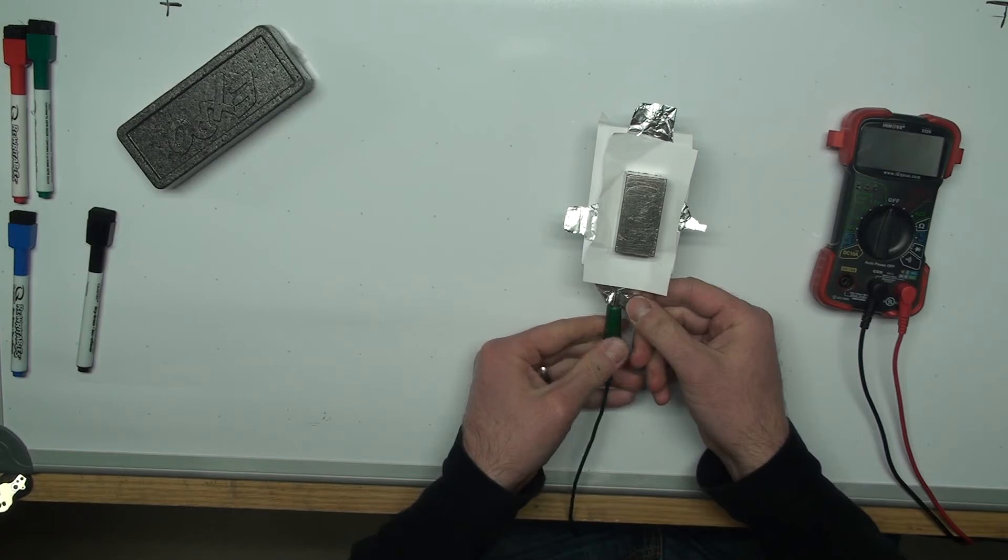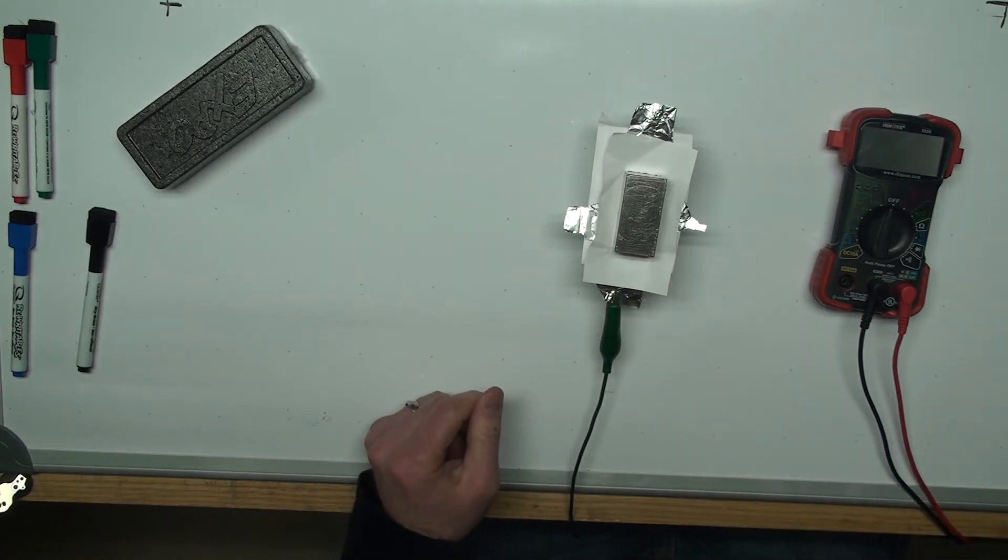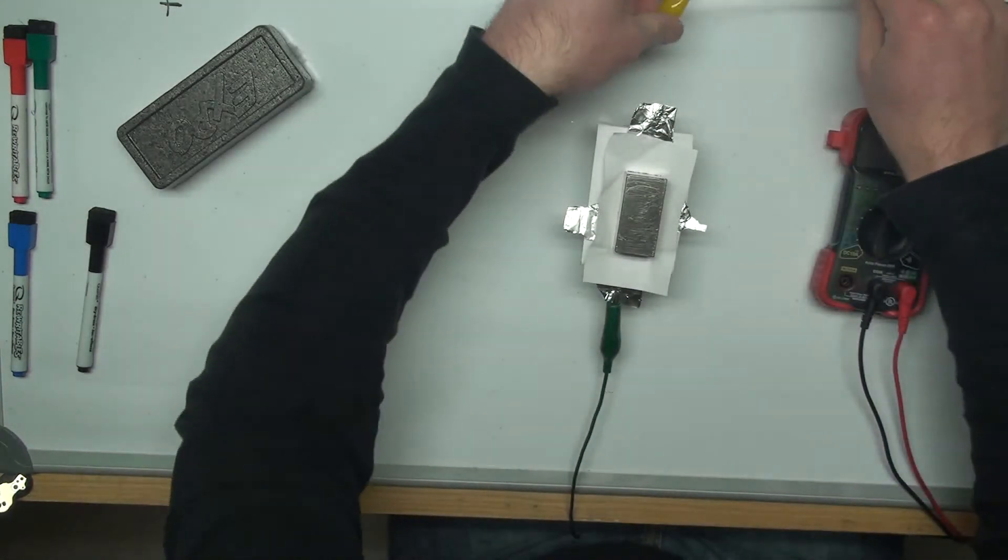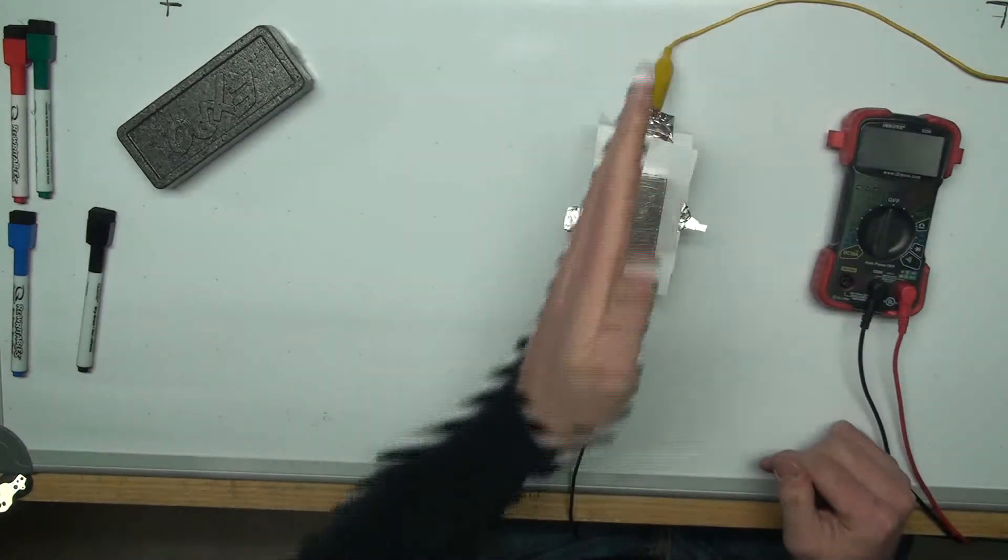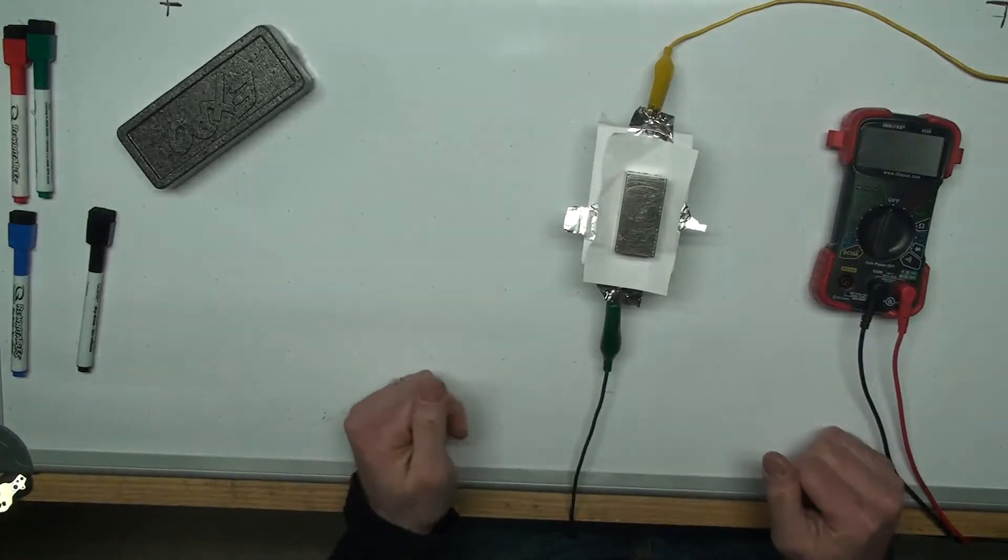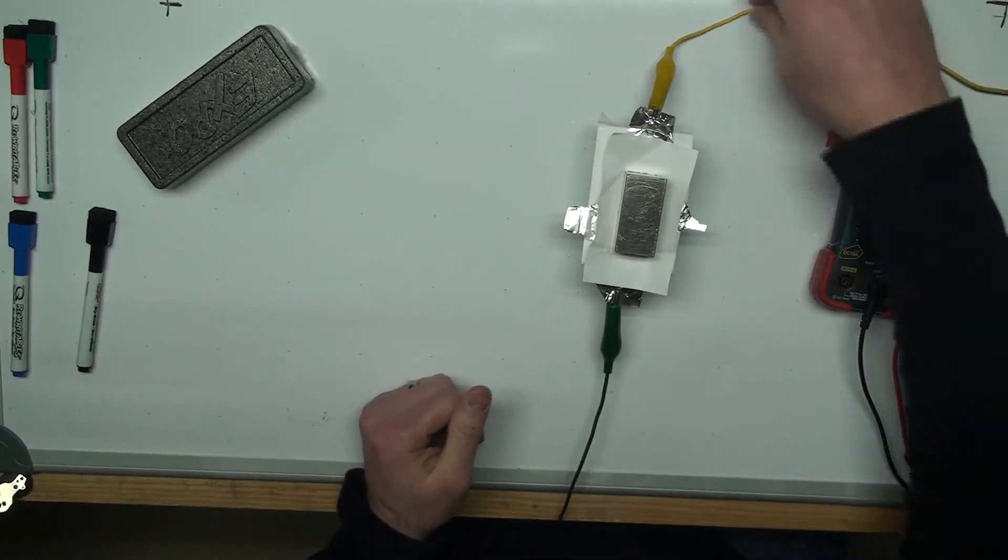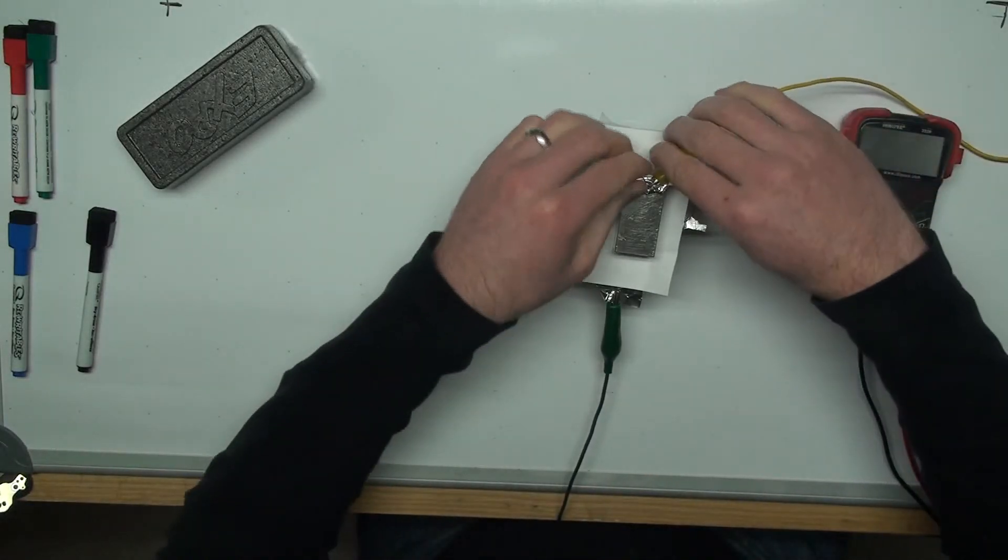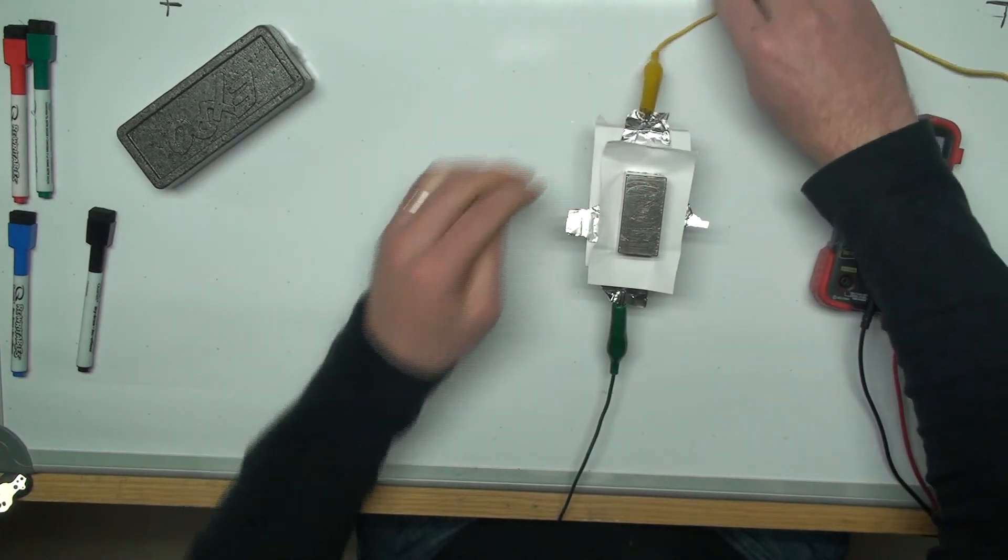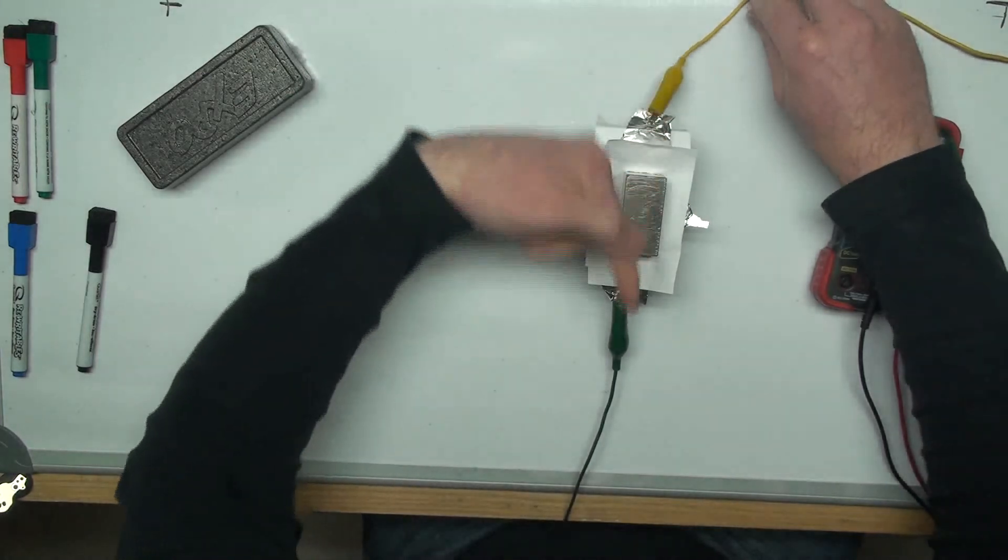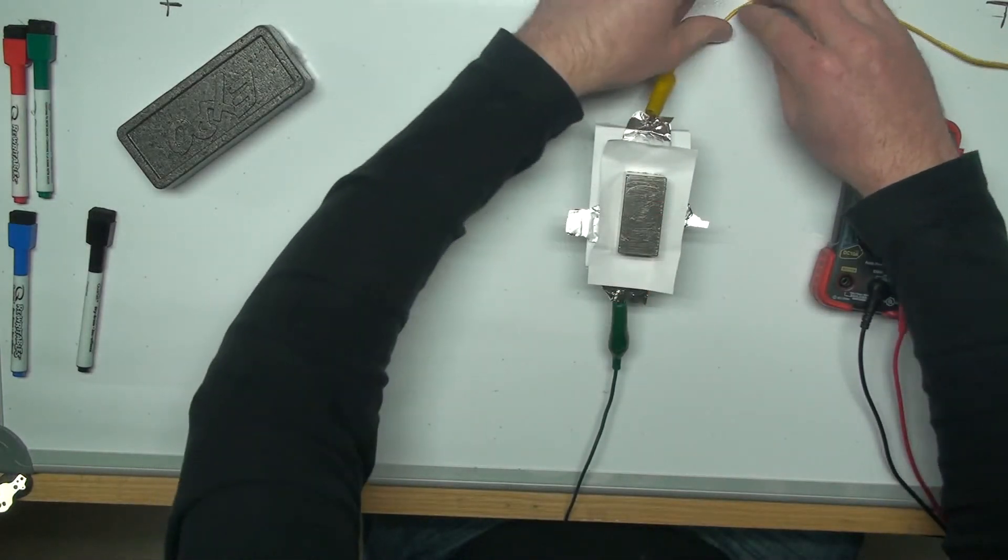First we'll need to set up an electric current traveling through the sensor. Conventional current, this is my positive lead. These are very strong magnets so I've got to be careful. This is my positive lead, my negative lead. So conventional current would say that things are going this direction.